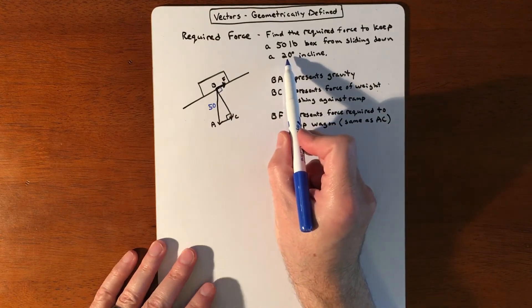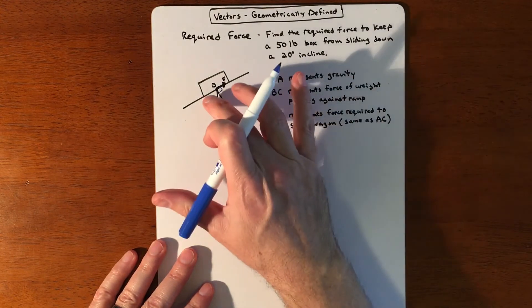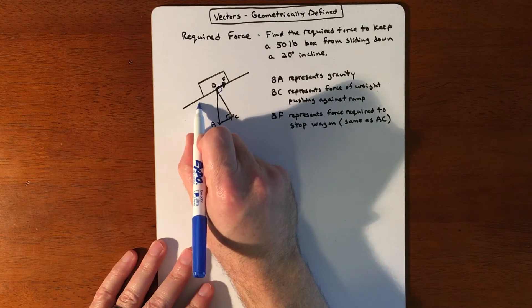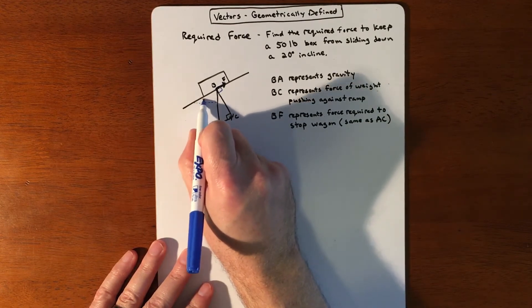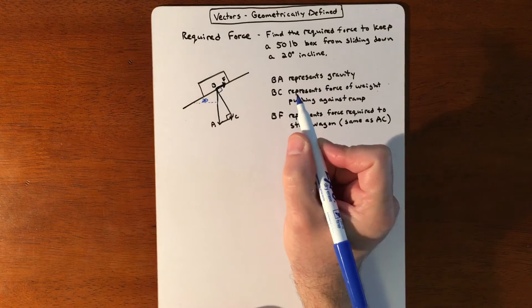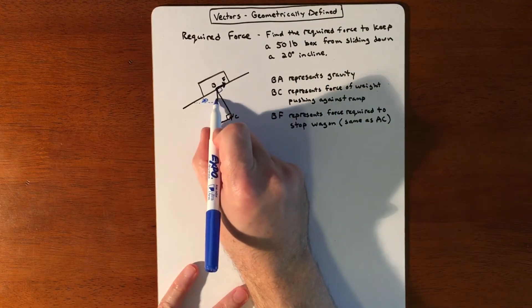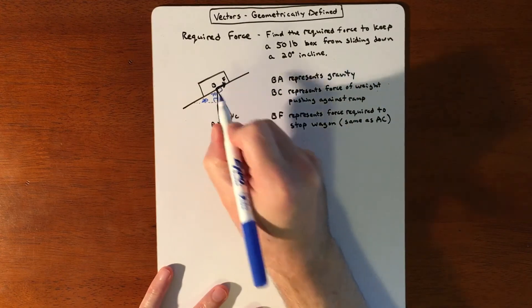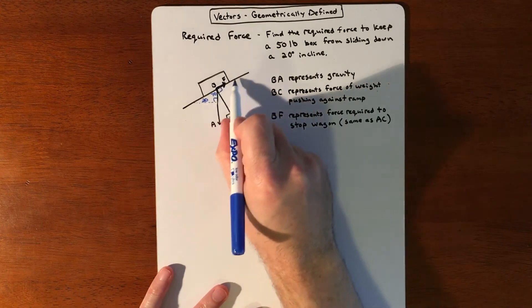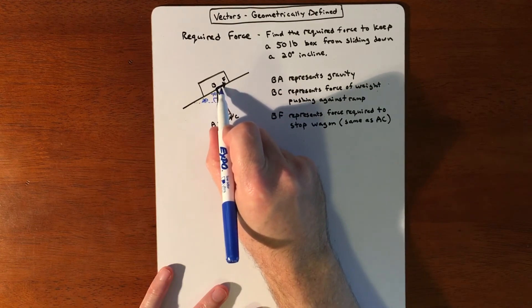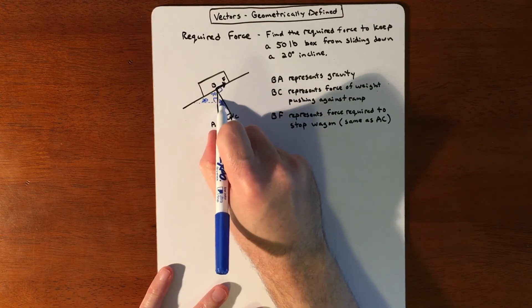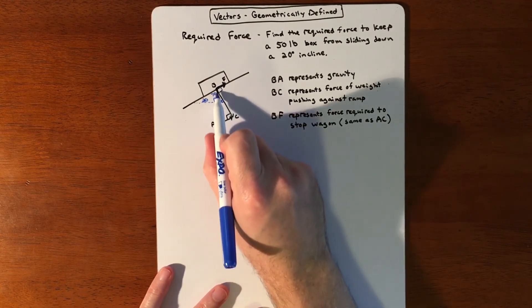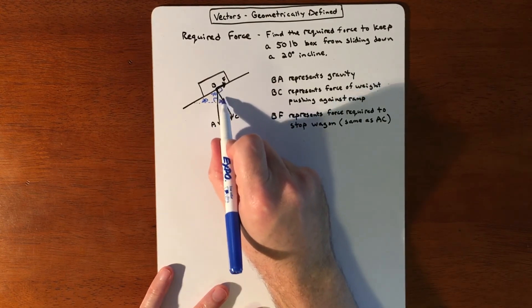You have this 20-degree incline—what role does that play? If you look at it, this makes a right triangle. If that's 20 degrees and this makes 90 degrees, that leaves this to be 70 degrees. With another straight line and a 90-degree angle on this side, that leaves this to be 20 degrees. So surprisingly, that 20-degree incline is the same as the angle between gravity and the force perpendicular to the ramp.